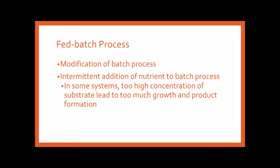Next is the fed-batch process, which is a modified batch process where you intermittently add nutrients. This is done because high concentrations of substrates can lead to too much growth and product formation, and you want to control that. It is also used when you need to limit or replenish a substrate — for example, to prolong the exponential growth phase or optimize conditions during fermentation.